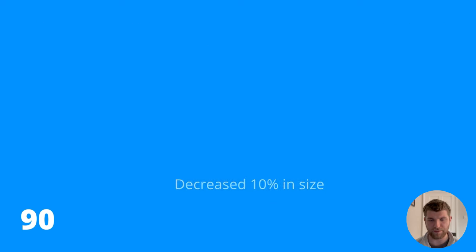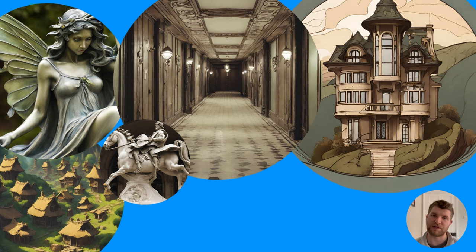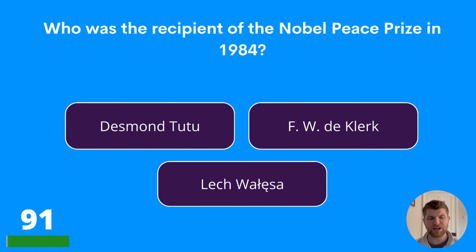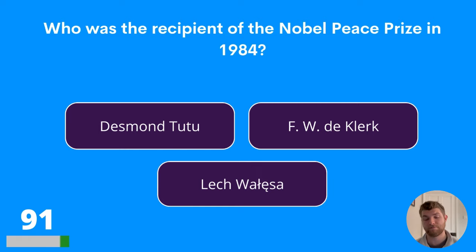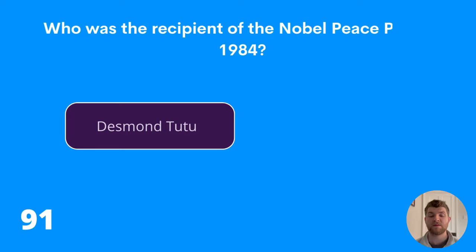And now we're going to finish with a mystery round of 10 questions. Question ninety-one: who was the recipient of the Nobel Peace Prize in 1984? Desmond Tutu, F.W. de Klerk, or Lech Wałęsa? The answer is Desmond Tutu.